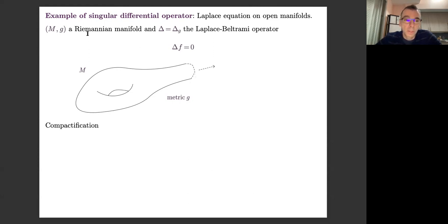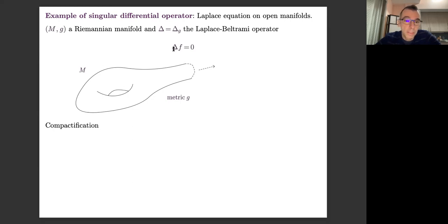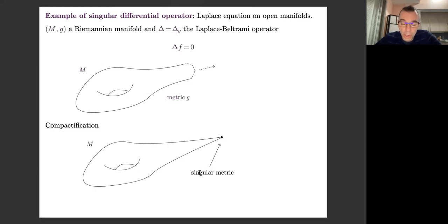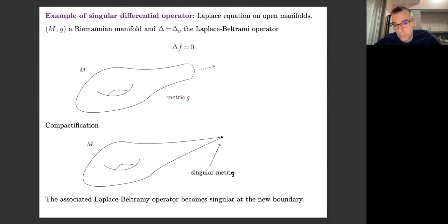For instance, take a Riemannian manifold and take the Laplace-Beltrami operator associated to the metric. We'd like to compactify this manifold to apply the classical theory for compact manifolds. But when you compactify, the metric usually gets singular on the boundary — you add a new point which is a sort of cusp, and the metric becomes singular there. So you finish with the associated Laplacian being a singular operator at this point at infinity.